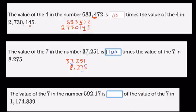And here we get the reverse kind of question. 592.17 is, now I don't say times because here's a fraction. Is what fraction of the value in the 7 for 1,174.839? So we're looking at the 7 here.